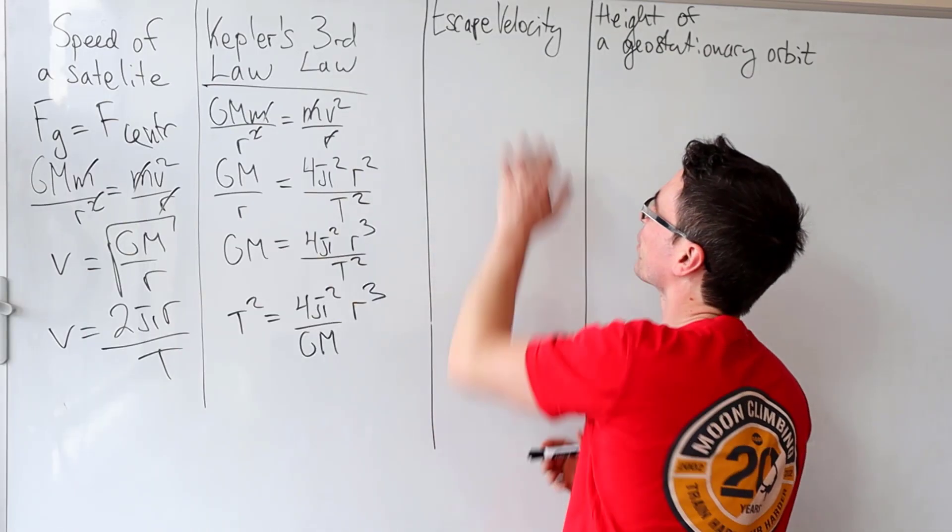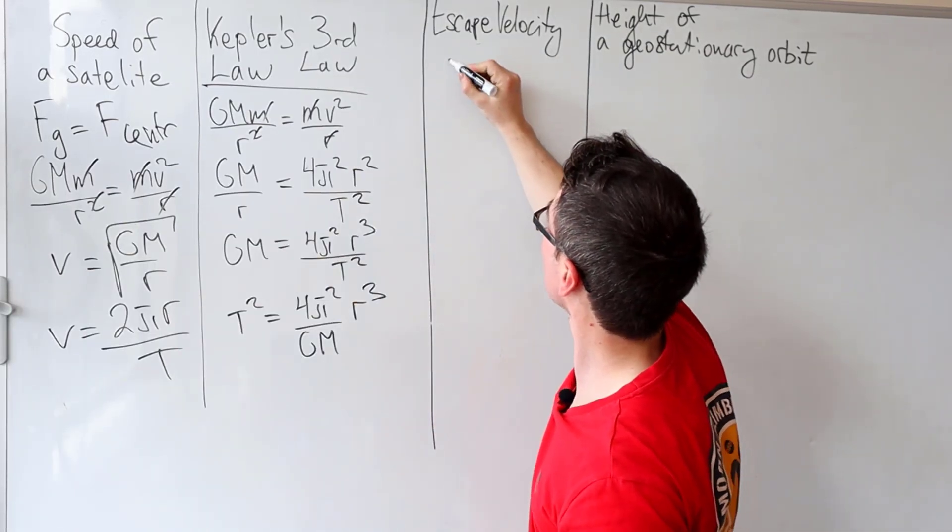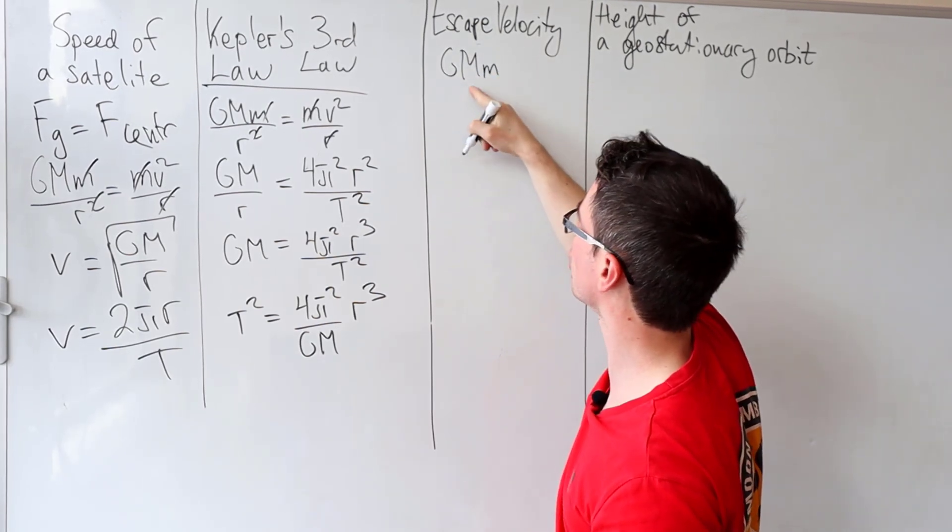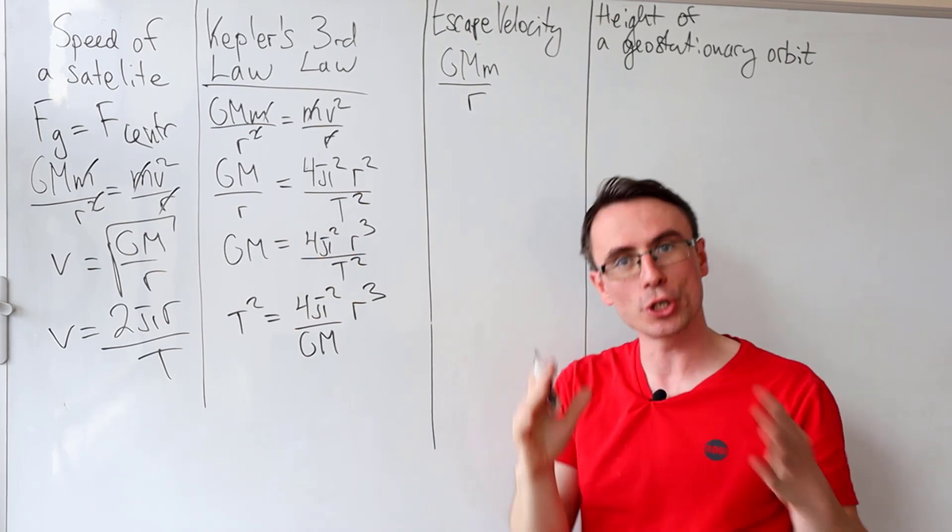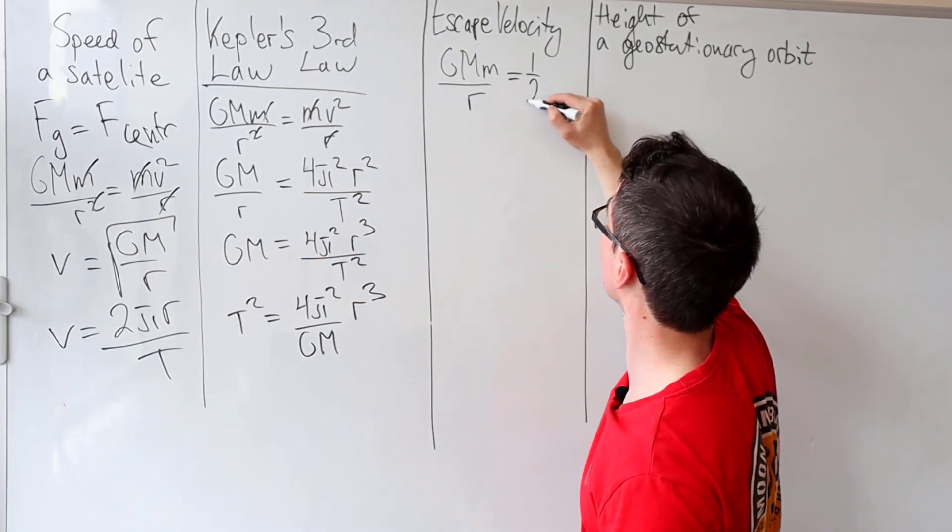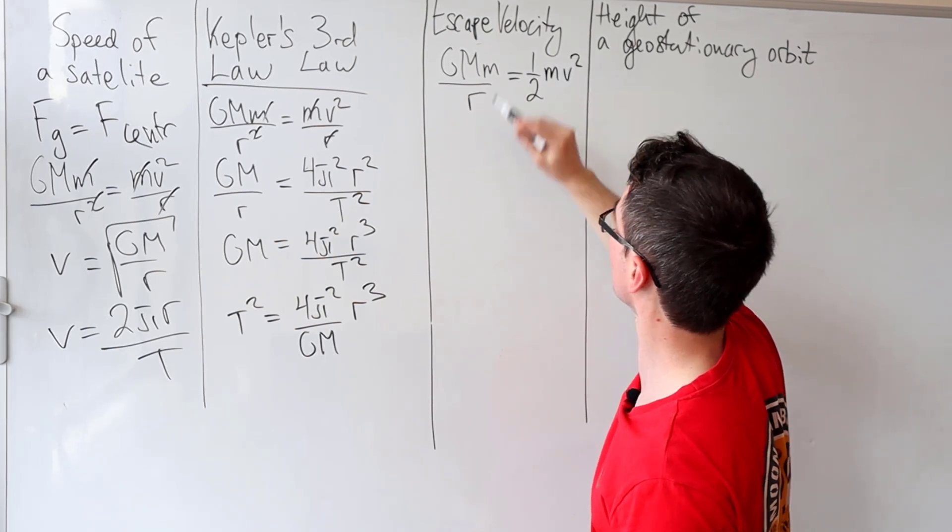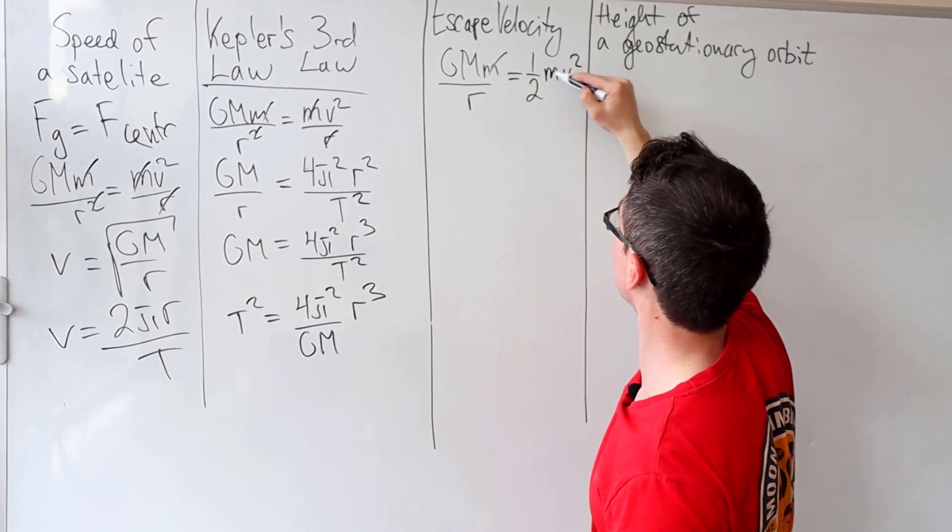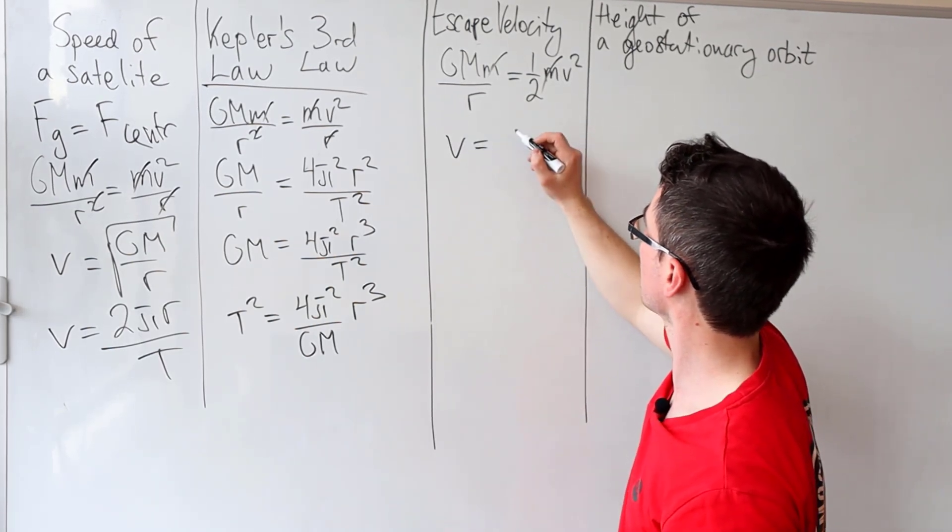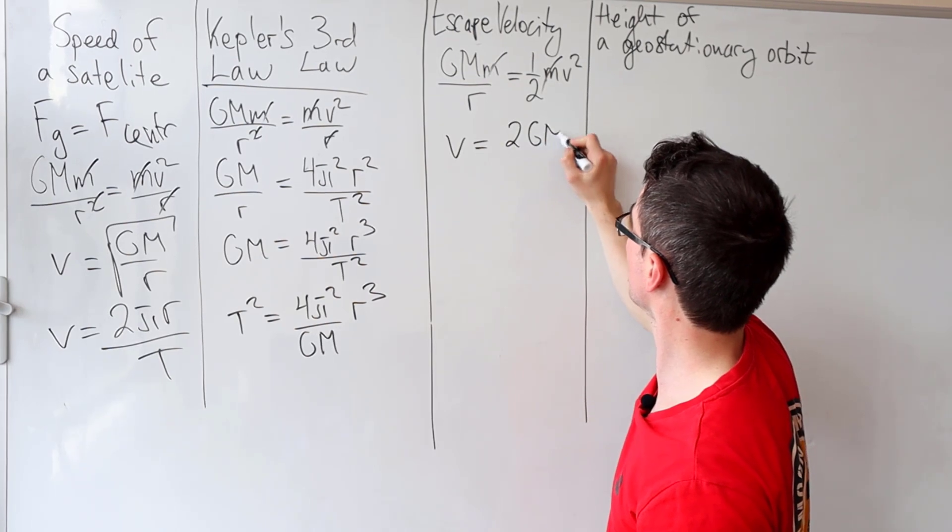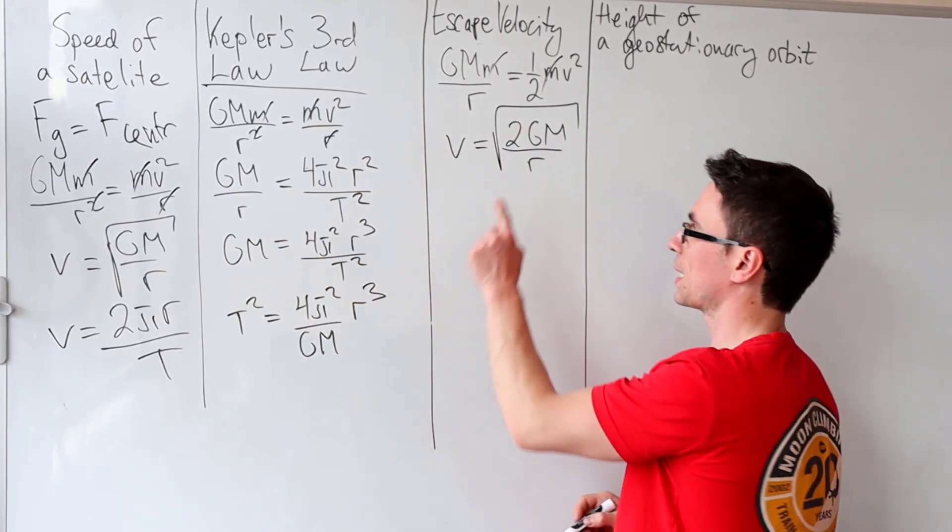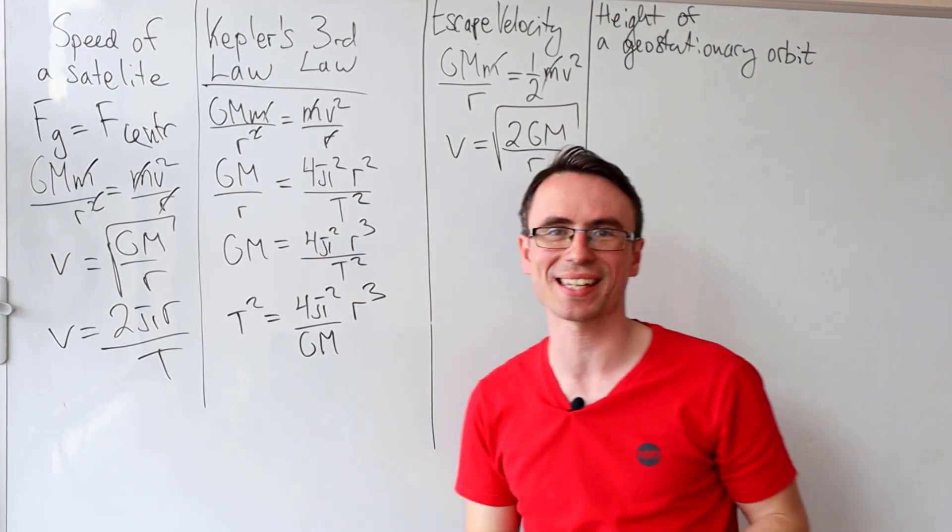To derive the escape velocity equation, all we need to do is set the gravitational potential energy, which remember is GM/r, not by r², set that equal to the kinetic energy, which is ½mv². And then we're going to cancel those out. Let's rearrange for v. So v will be 2GM/r squared rooted. And this here is the escape velocity.